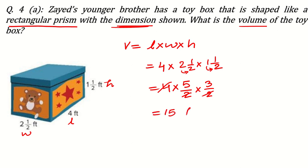So we have 4 multiply 5 over 2 multiply 3 over 2. The 2 in the denominator and 4 cancel, giving 5 times 3 equals 15. The answer is 15 cubic feet. We write the unit as feet cubed or cubic feet because we are dealing with volume — multiplying three dimensions.